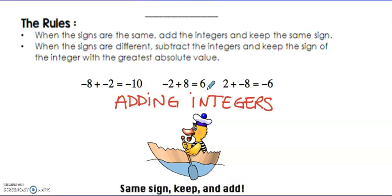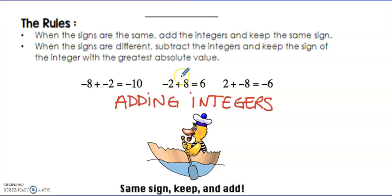For negative 2 plus positive 8, we have different signs, so I'm going to subtract the absolute values. So 8 minus 2 is 6, and the number with the largest absolute value is positive, so it's a positive 6.